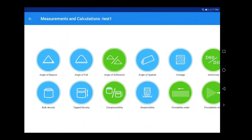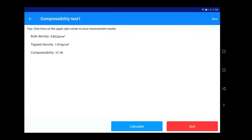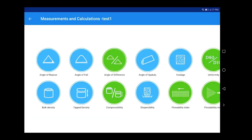After the bulk density and tap density are measured and saved, click the Compressibility. Click the Calculate to calculate compressibility. Click Save, and quit to complete the calculation of compressibility.